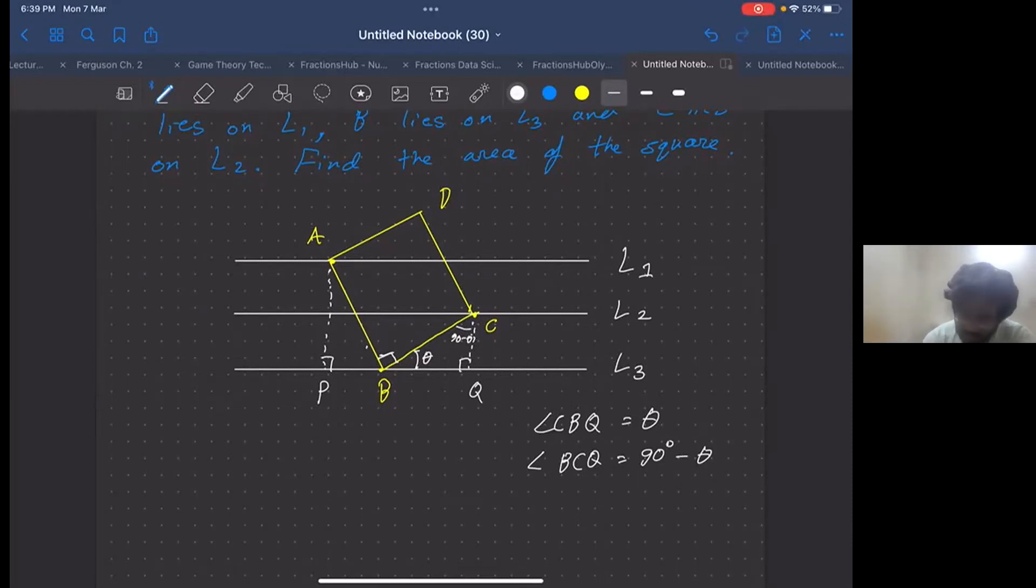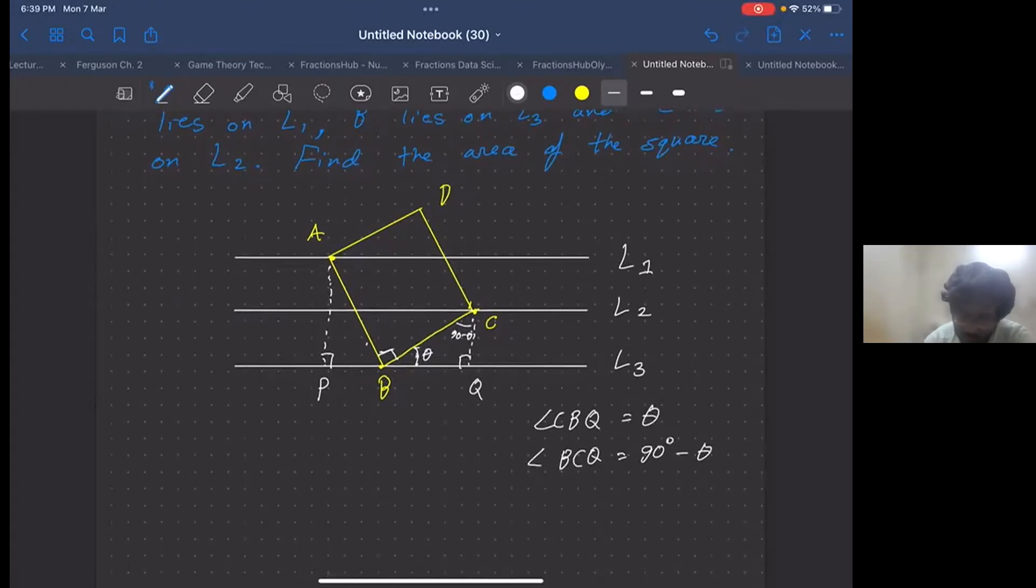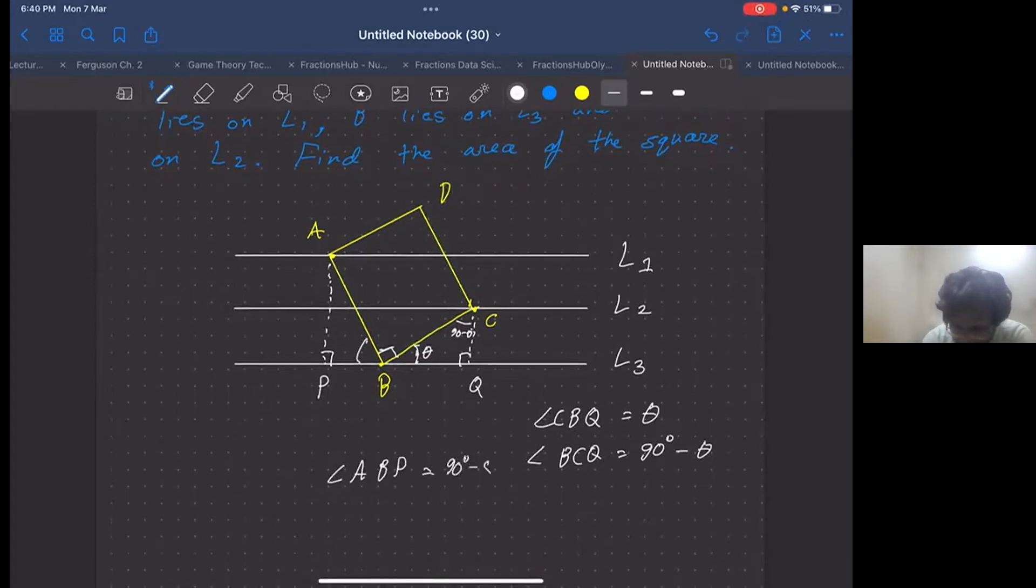Similarly, look at the straight line. This angle is theta, angle CBQ, and angle ABC is 90 degrees because it is a square. So angle ABP should be 180 degrees minus 90 degrees minus theta. And because angle ABP is 90 degrees, angle PAB should be 90 degrees minus (90 degrees minus theta), which is nothing but theta.